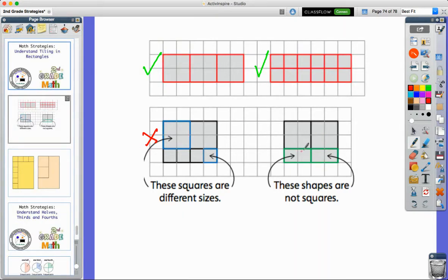Over here, it's the same thing. We have some bigger squares, but then we have some smaller rectangles, and they're not the same size or the same shape. So when we talk about tiling, they have to have the same size and the same shape throughout.